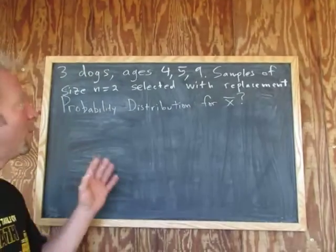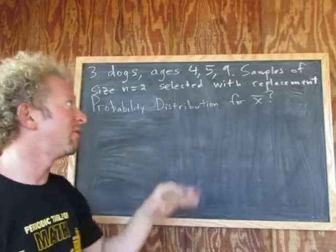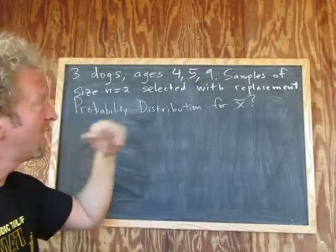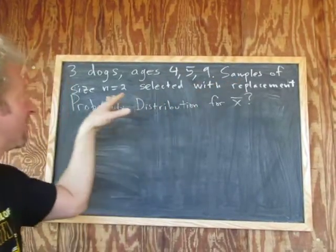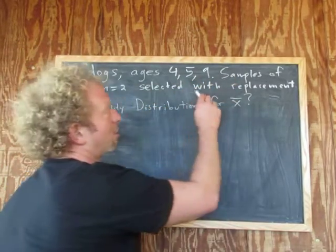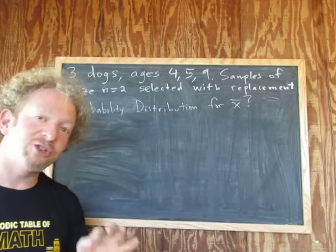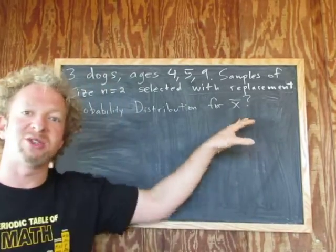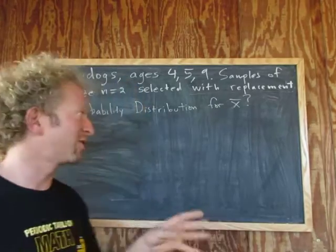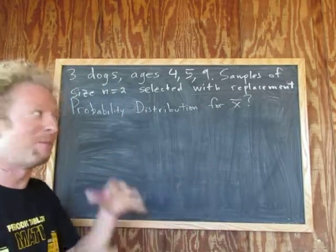In this video, we have three dogs, ages 4, 5, and 9. So that's going to be our population — the ages of the three dogs. We're going to take samples of size n equals 2 from this population with replacement. We want to construct a probability distribution for the sample means — we're actually going to construct a probability distribution for x-bar by hand, from scratch.